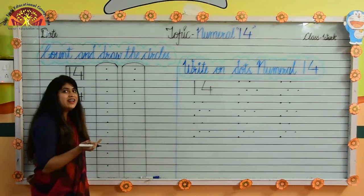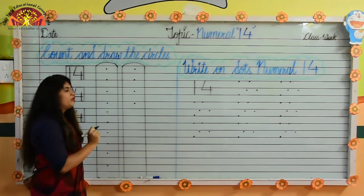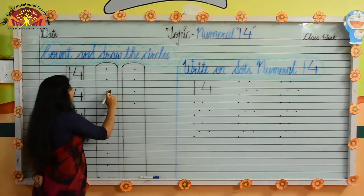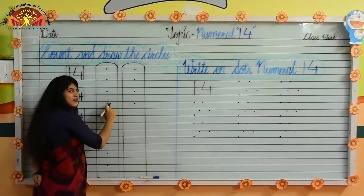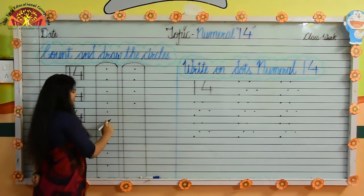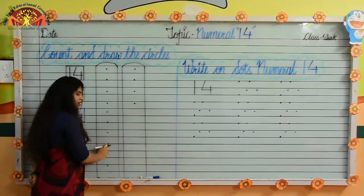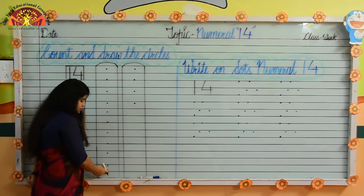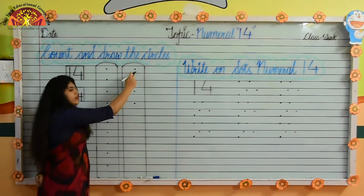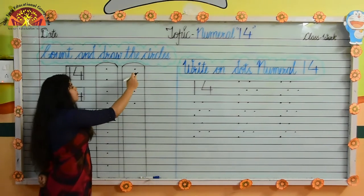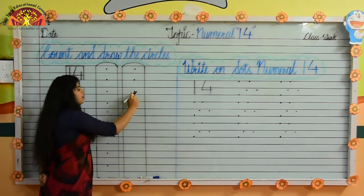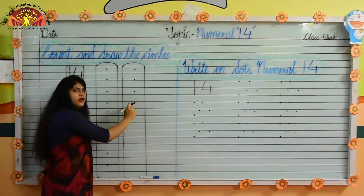Tell me kids, how many dots are there? Let's count with me. 1, 2, 3, 4, 5, 6, 7, 8, 9, 10, 11, 12, 13, 14.